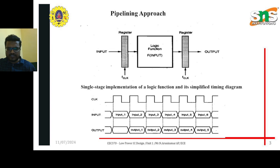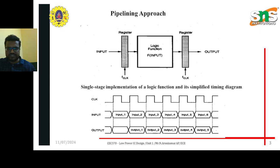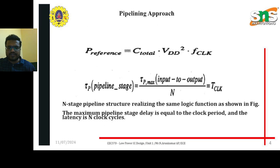The output of the first register is given to the input of the next register, so it creates output 1 for input 2. Because the output of input 1 is given to the next stage — input 2 — it generates output 1 at the input 2 terminal. There are no clock cycles wasted for the first input 1 signal. Likewise, all processes are formed in the pipelining approach.